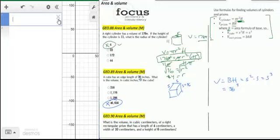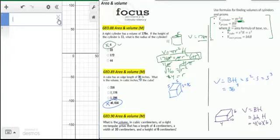For this problem, we find the volume of a right rectangular prism with dimensions of 4 by 10 width and a height of 6. Volume equals capital B times capital H, where the base area is 4 times 10, then multiplied by the height of 6. Six times 4 is 24, times 10 is 240 — that's the answer.